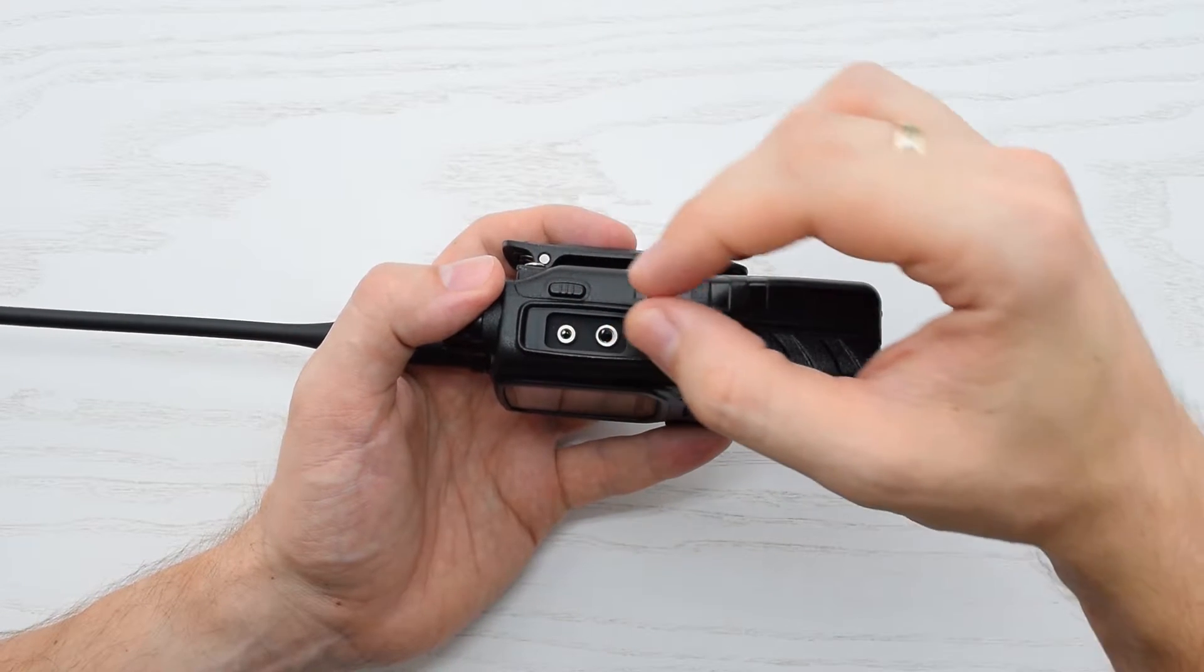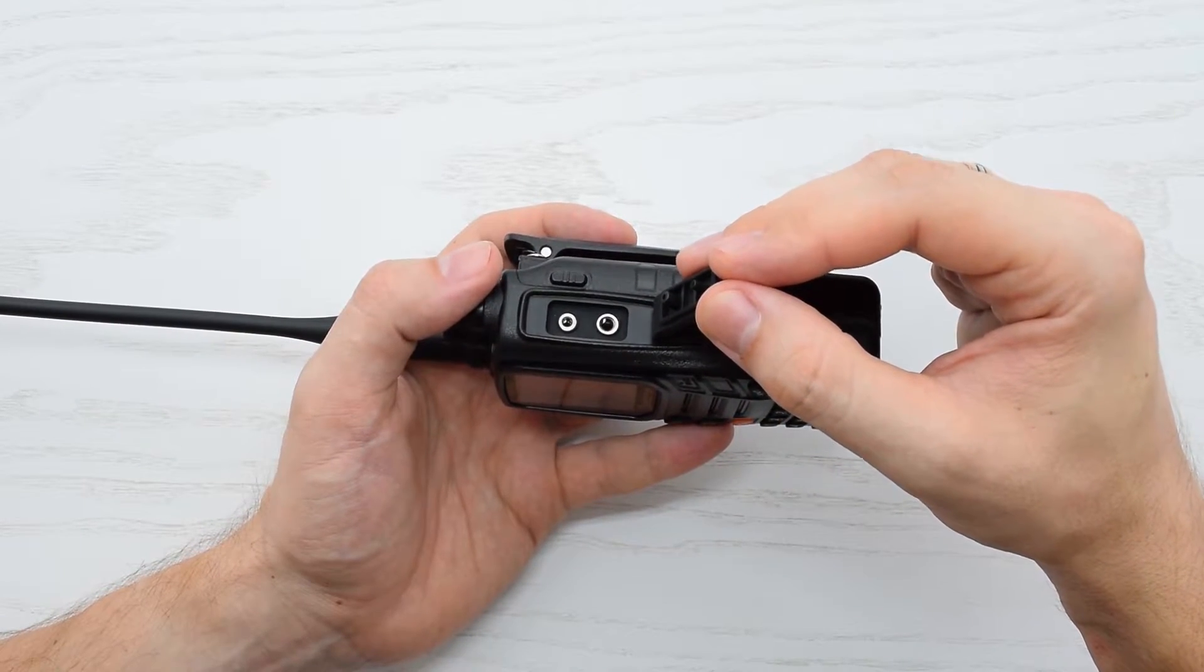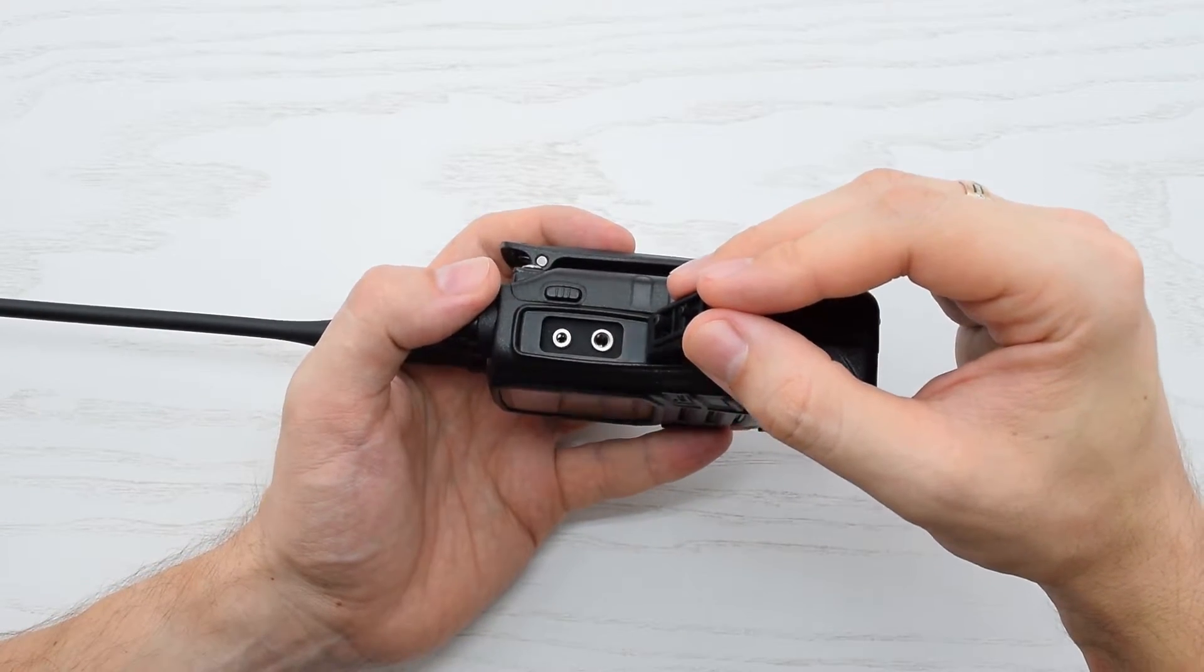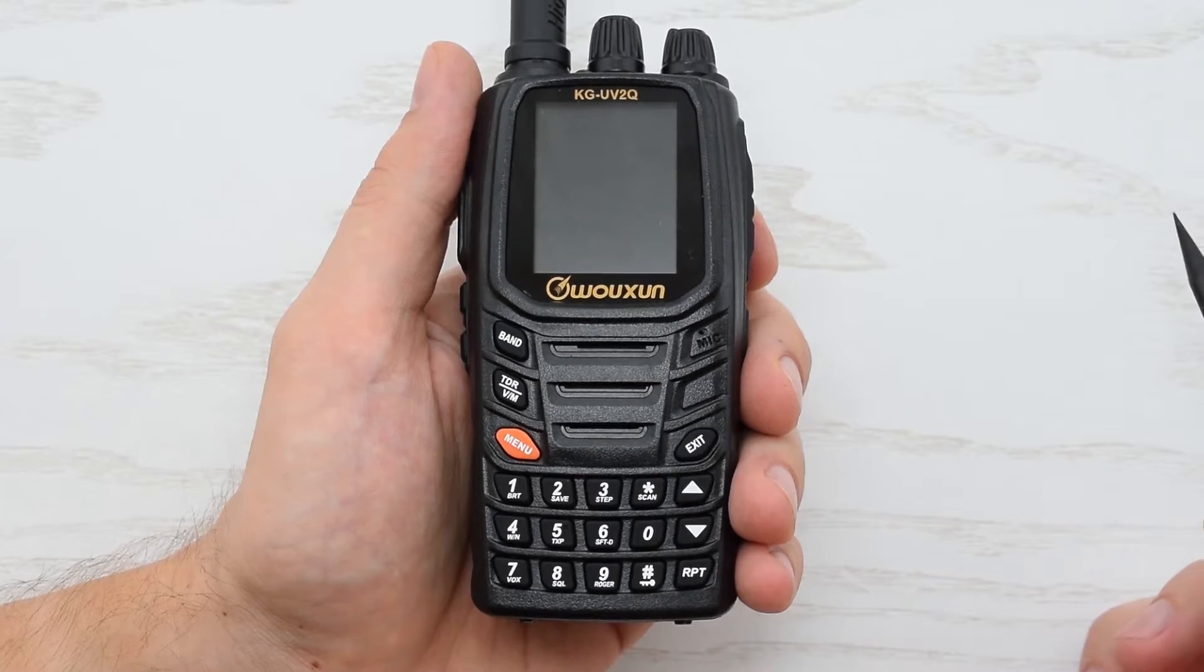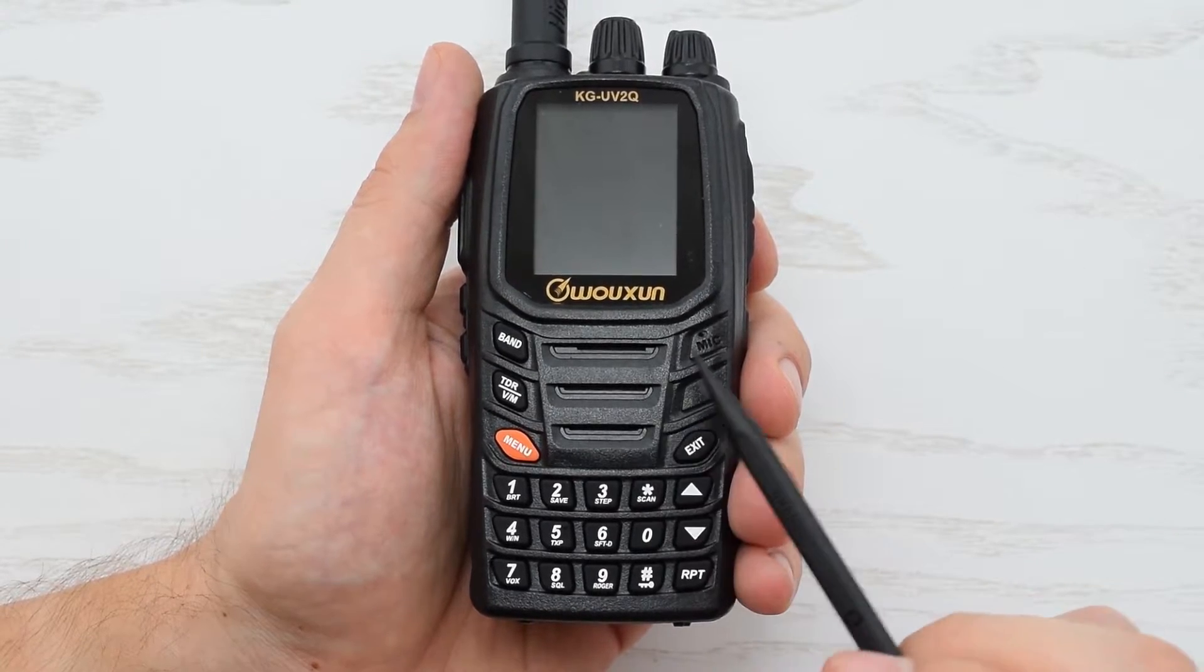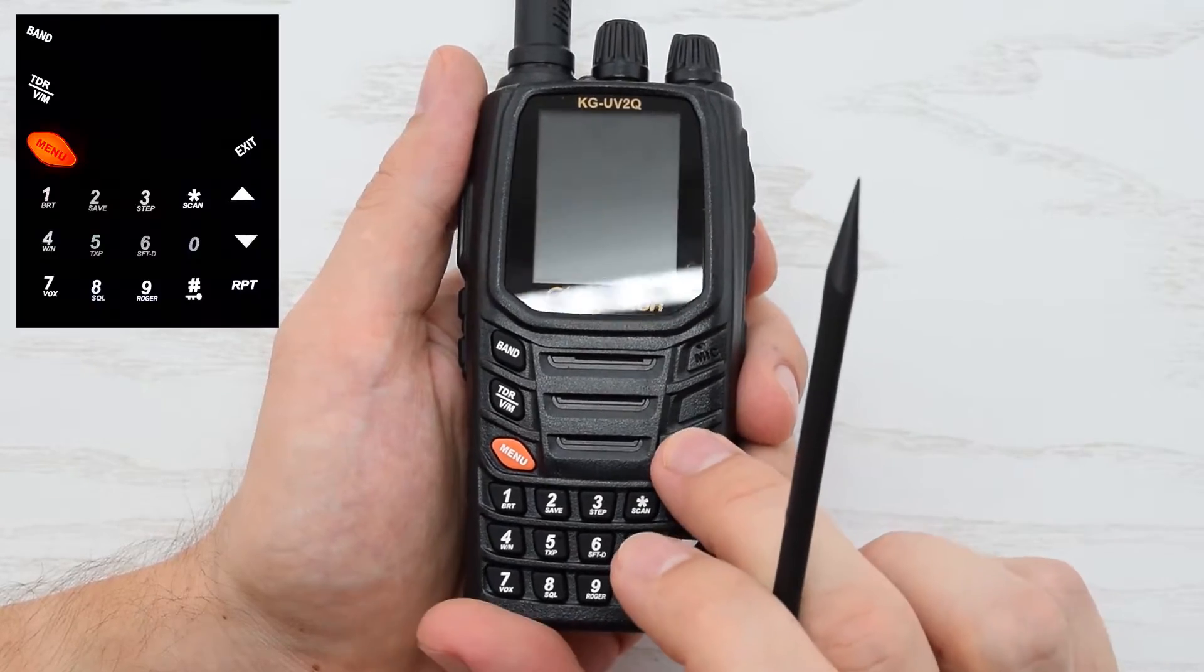On the right side, we have two-prong standard Kenwood port for speaker mic, headset and USB programming cable. On the front panel, we have very loud speaker, microphone and backlit rubber buttons.